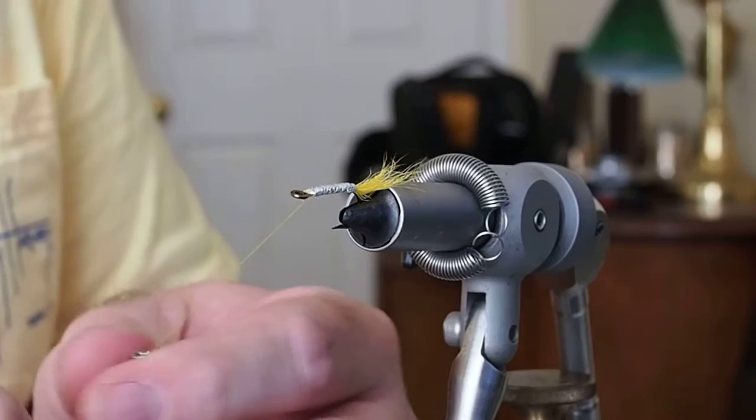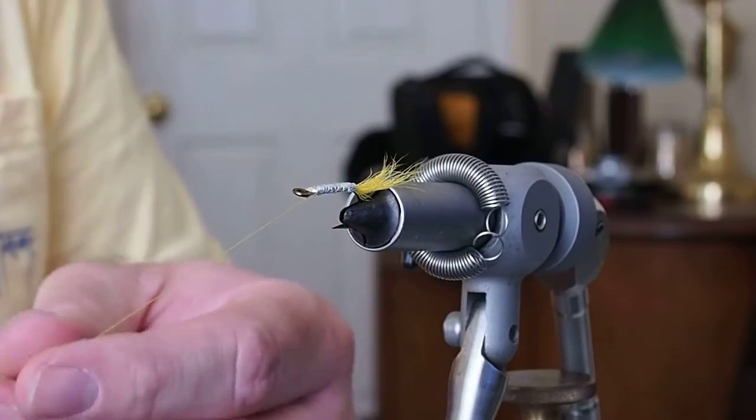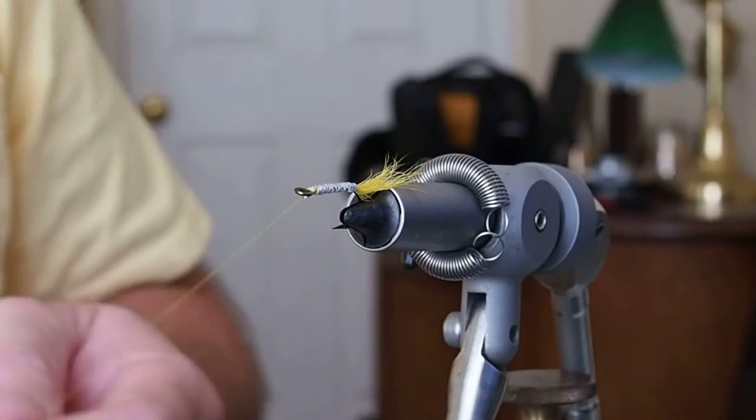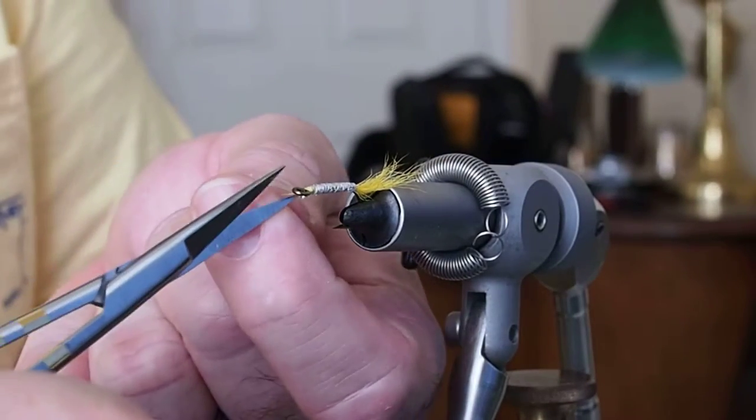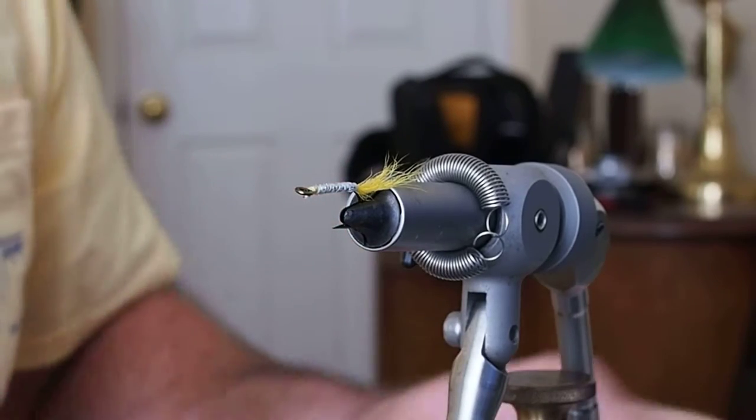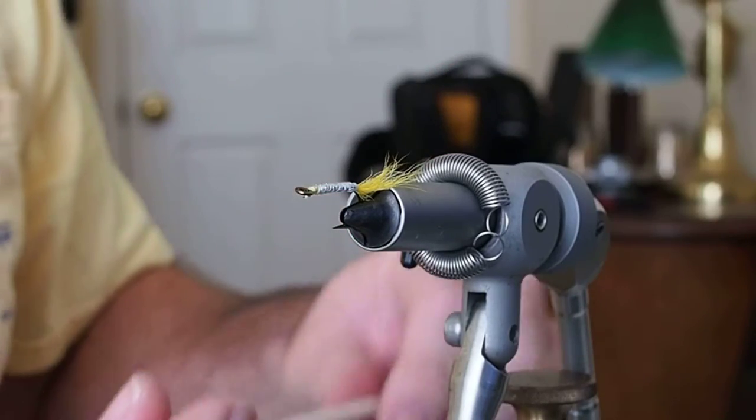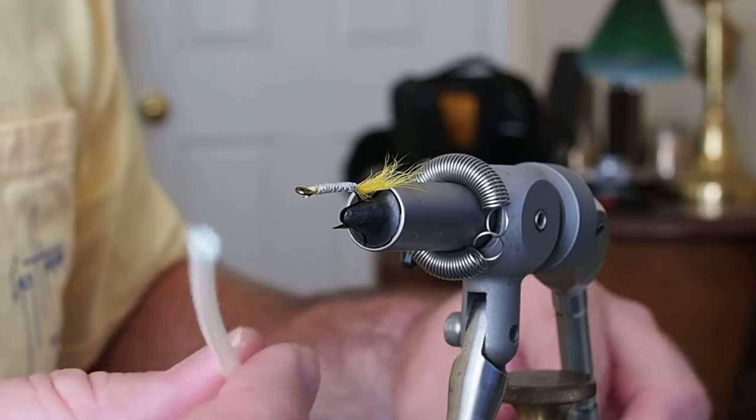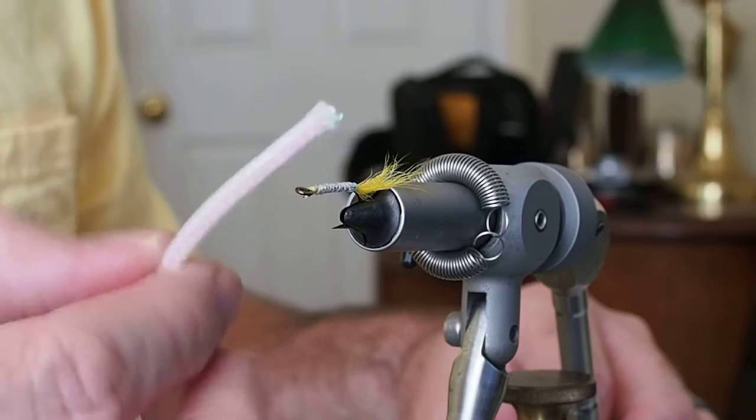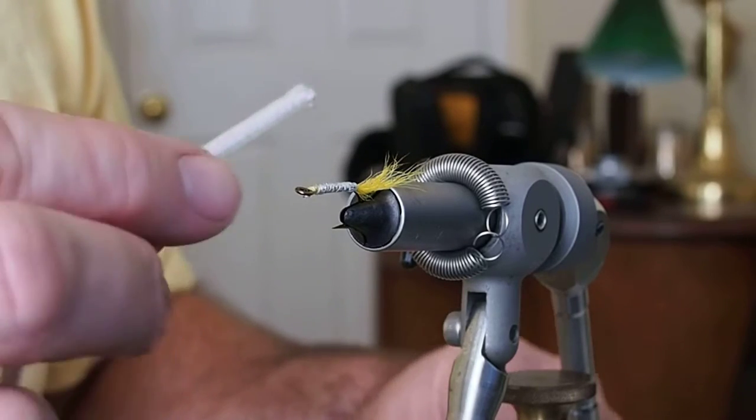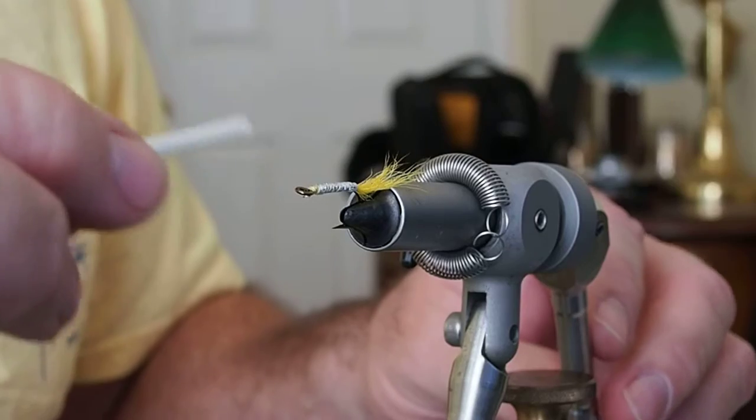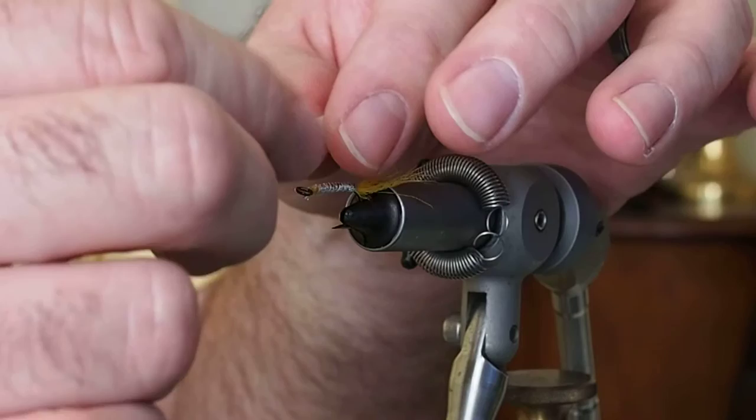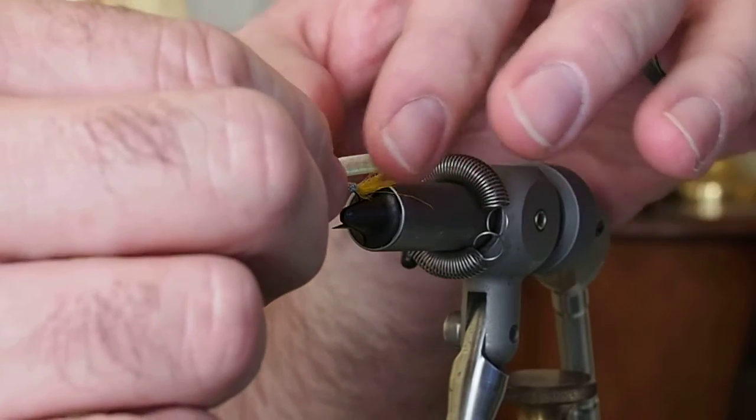So now what we're going to do is give it a whip and cut our thread off. And here's why. I'm going to take some minnow body which is just nylon cord or nylon rope with a mylar body around it. What we want to do is cut a length of this that we're going to insert over the hook and around the tail. So you want a length that's just probably past the length of the tail.